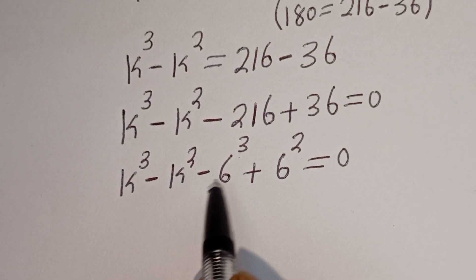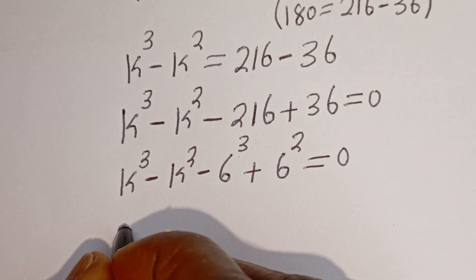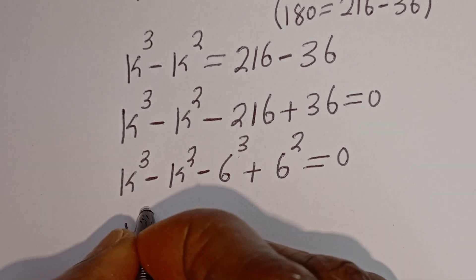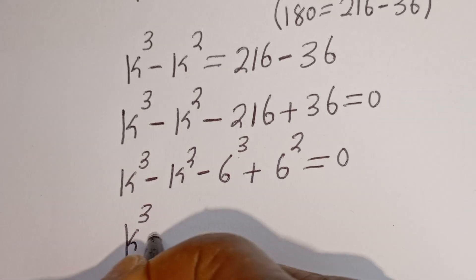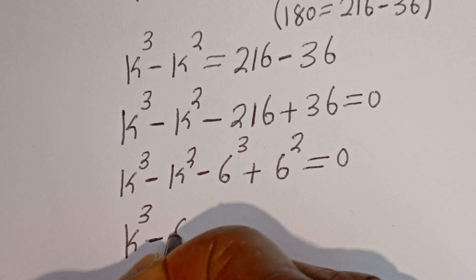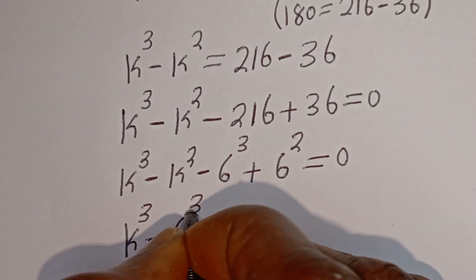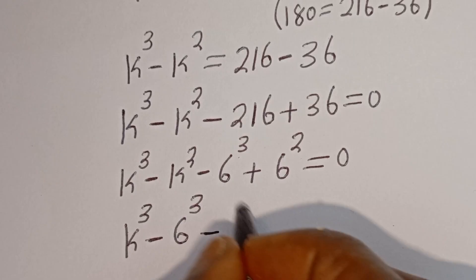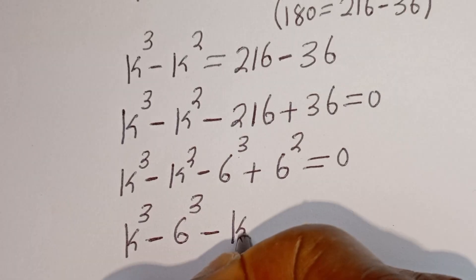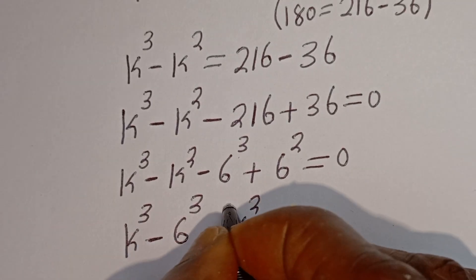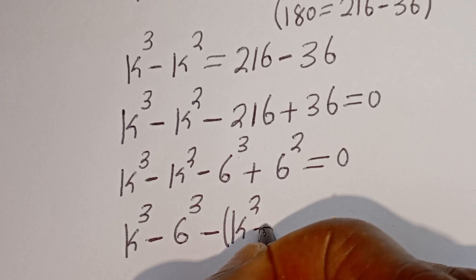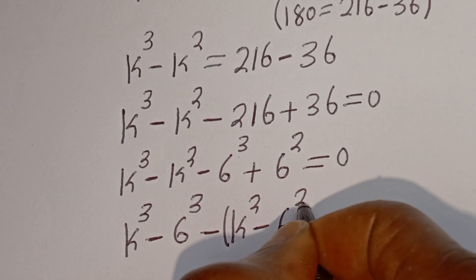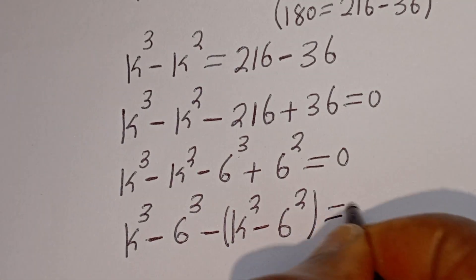Then we have K to the power of 3 here and 6 to the power of 3 here. This can be written as K to the power of 3 minus 6 to the power of 3, then here we have minus K squared, and this minus 6 squared, is equal to 0.